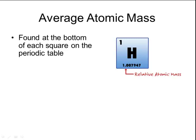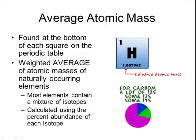The average atomic mass is found at the bottom of each square on the periodic table. It often involves decimal places because it is the weighted average of all the atomic masses of naturally occurring isotopes. All elements on the periodic table are a mixture of various isotopes — for example, carbon atoms are mostly carbon-12, with some carbon-13 and carbon-14 — and the average atomic mass is calculated using the percent abundance of each isotope.